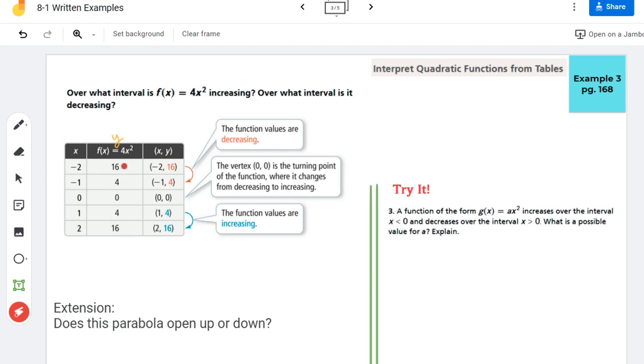As I go from 16 to 4 and from 4 to 0, you can see that the graph is decreasing here. Another way to write that, I would say decreasing where x is less than or equal to 0, because it's all those negative numbers where it's decreasing.